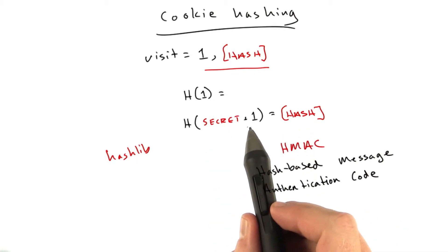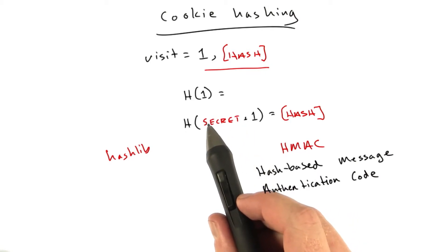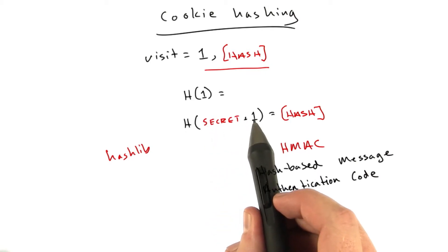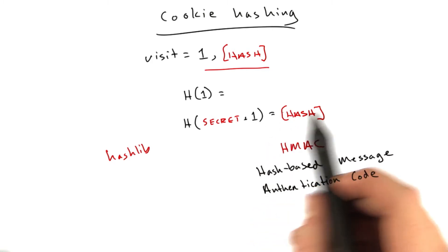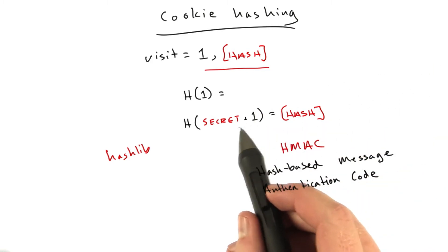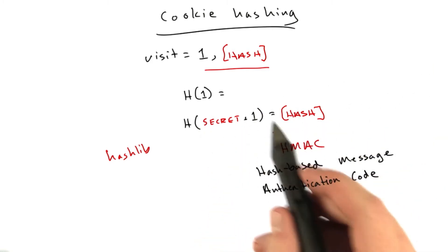There's a series of different types of attacks where if you just put your key plus the value, you can find a collision by just extending your value. Similarly, if you put your value and then the key, there's other attacks you can do.